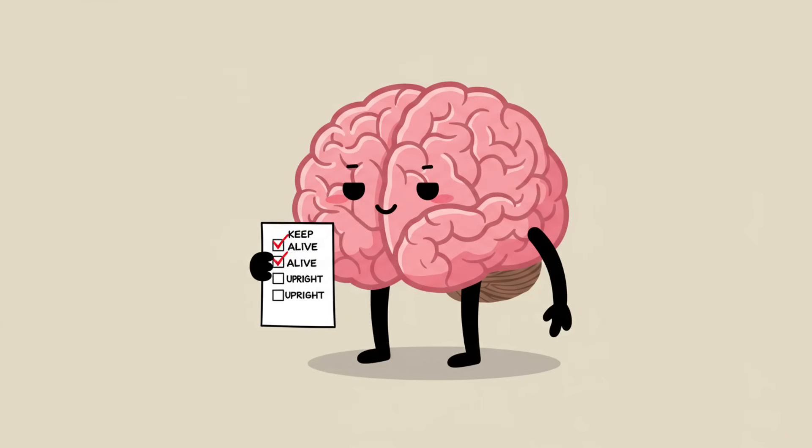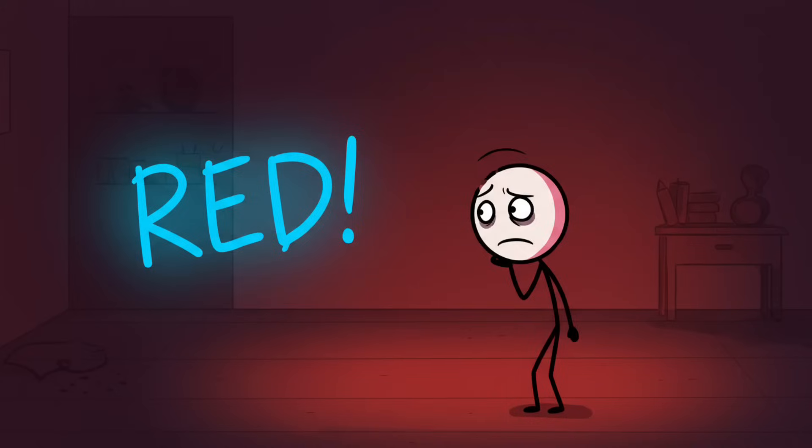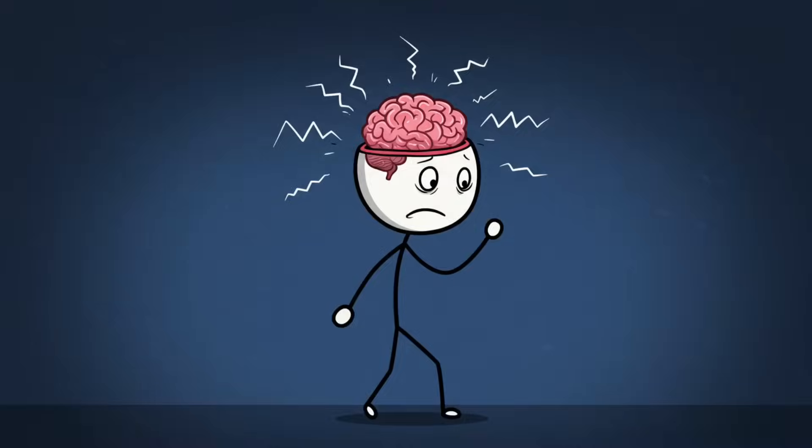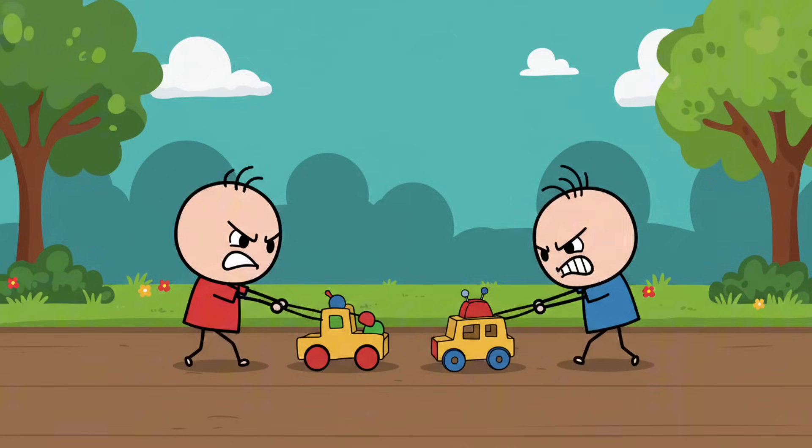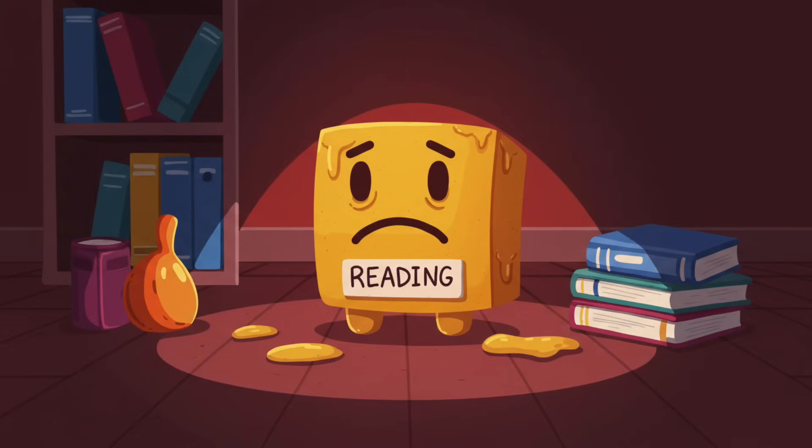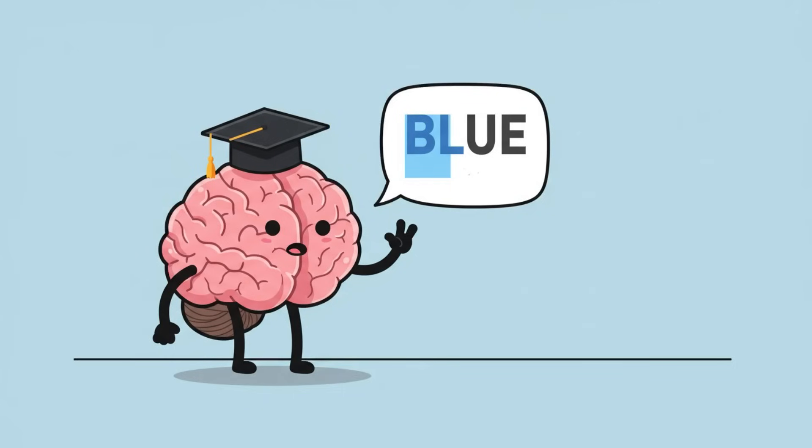Number four: the Stroop effect, words versus colors. Ever tried reading the word red written in bright blue ink and felt your brain start twitching like a caffeinated squirrel? Welcome to the Stroop effect, the ultimate cognitive tug of war where your brain's language center and visual center refuse to play nice. It's basically your mind's version of two toddlers fighting over the same toy, except the toy is reading without melting into frustration. Here's what's happening behind the scenes: your brain has gotten really good at reading, so when it sees a word it automatically wants to process its meaning.